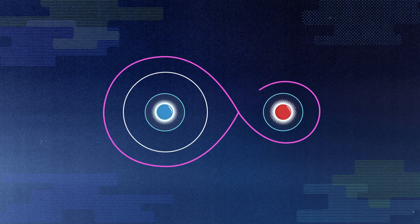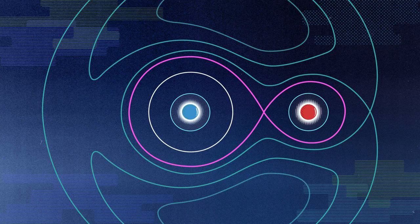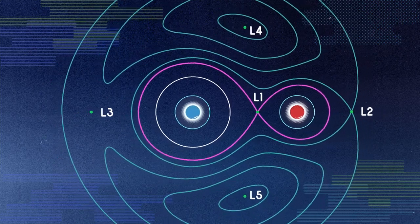But there are other points where we could feel the equal pull between the two stars. If we continue to map the lines of equal potential, we find other Lagrange points. As you can see, there are four other points that surround a binary system.